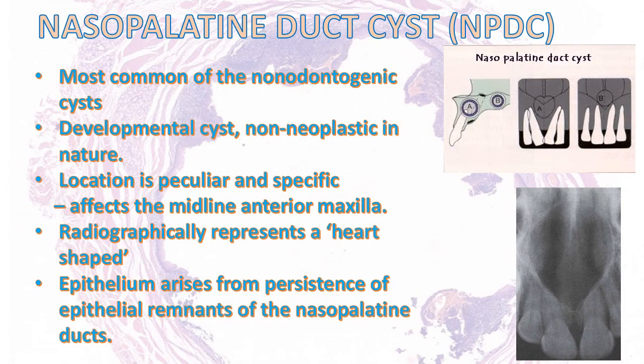The first cyst we will look at is the nasopalatine duct cyst, referred to as NPDC. It is the most common of non-odontogenic cysts, of developmental origin and non-neoplastic in nature. It affects the midline anterior maxilla. Radiographically, it characteristically presents as a heart-shaped radiolucency between the roots of the maxillary central incisors. The epithelium is believed to arise from persistence of epithelial remnants of the nasopalatine duct.